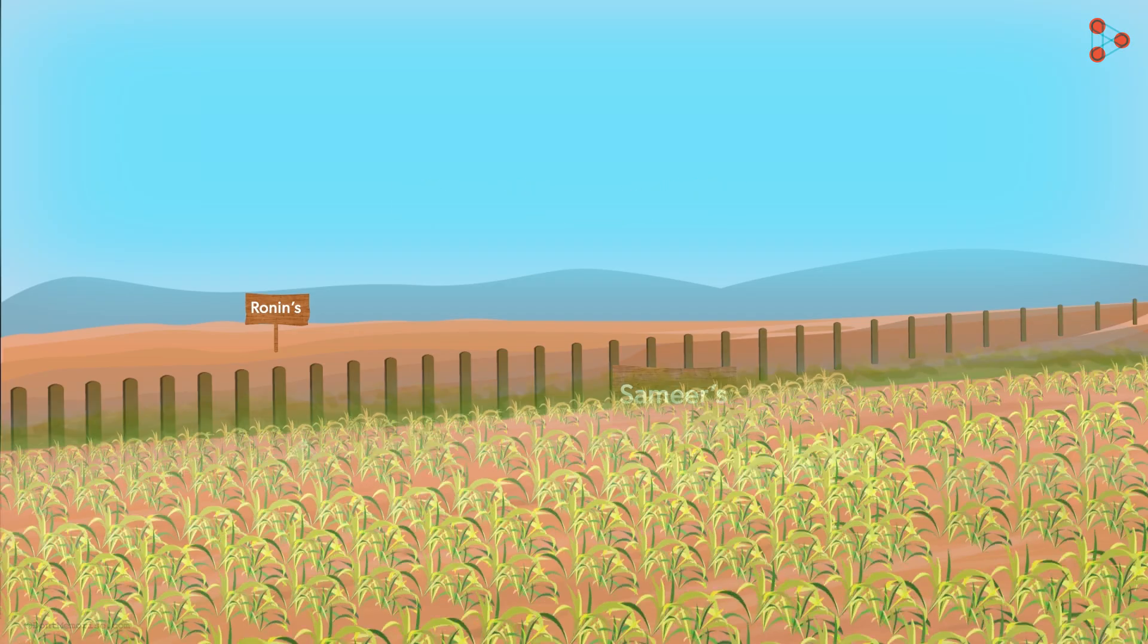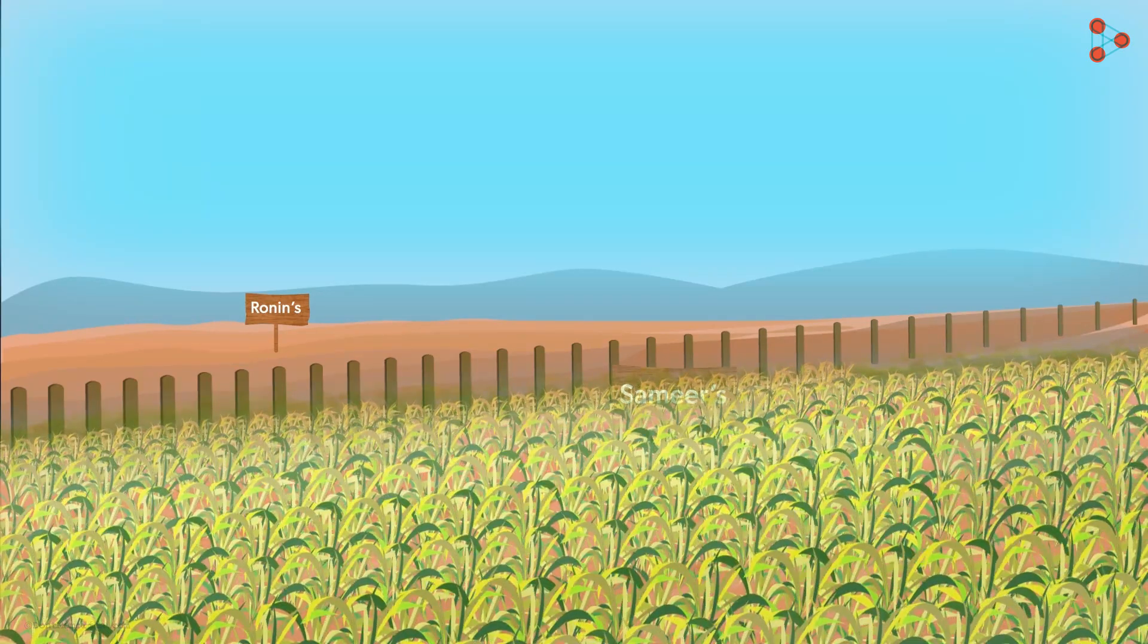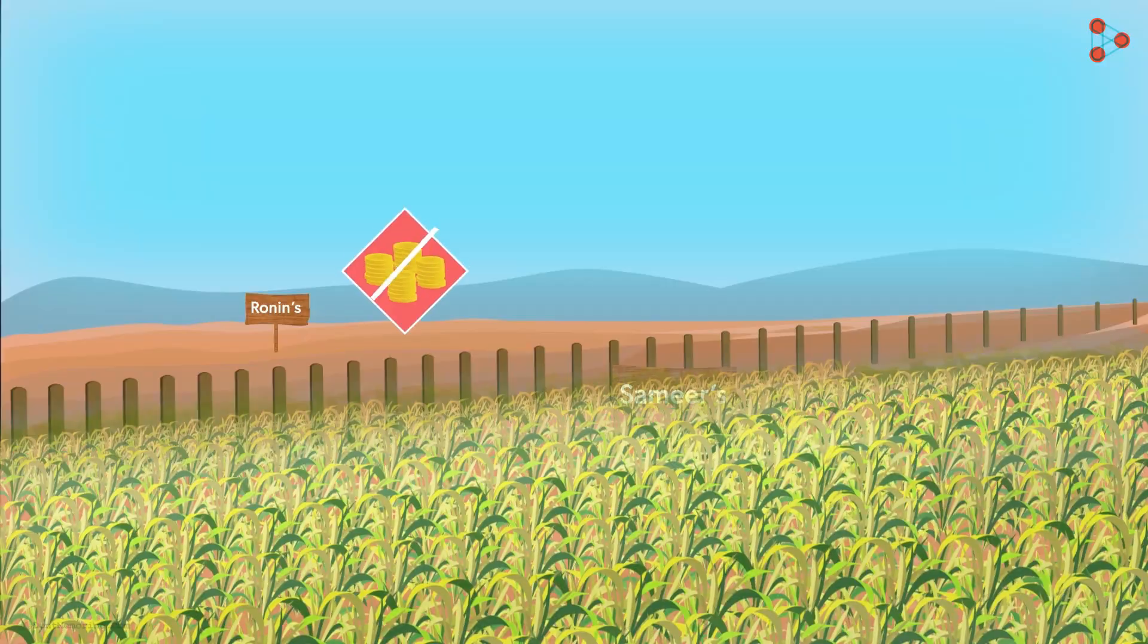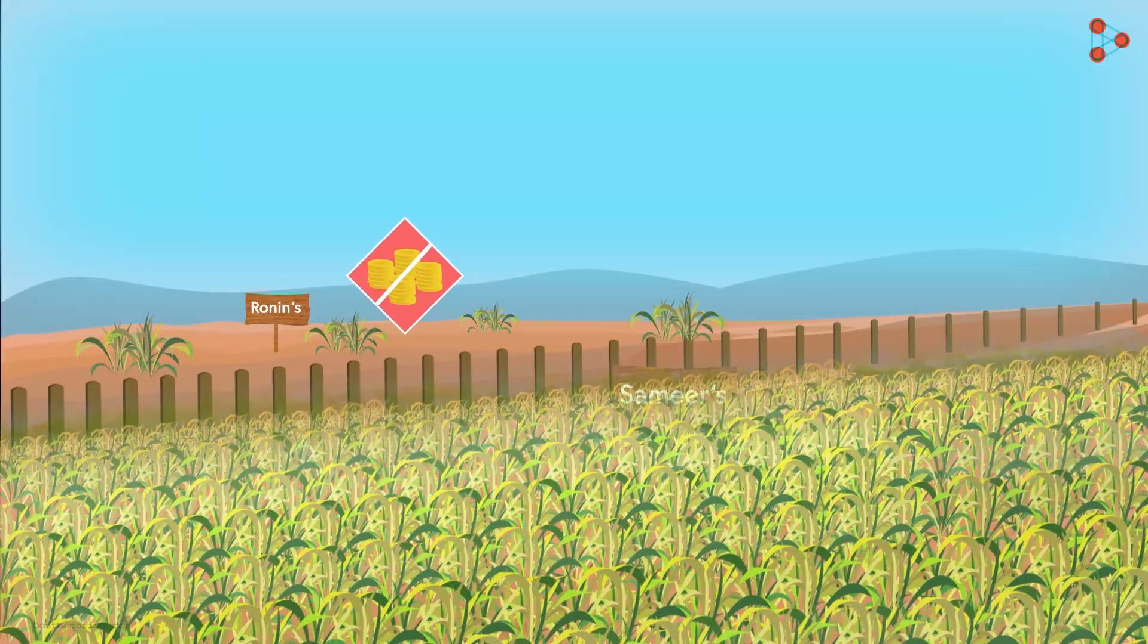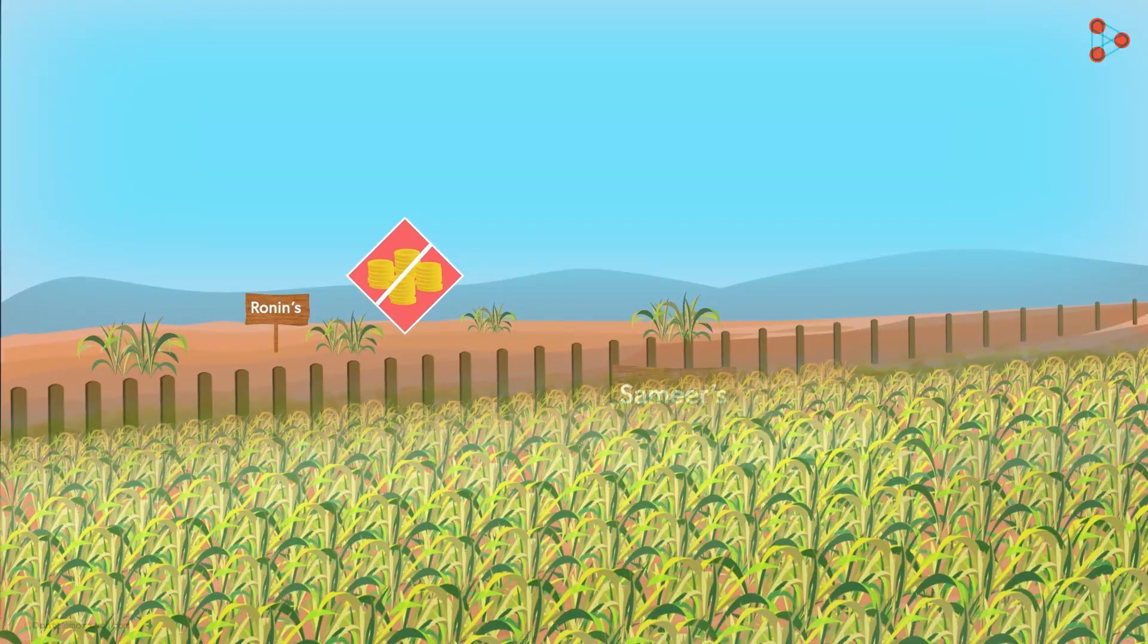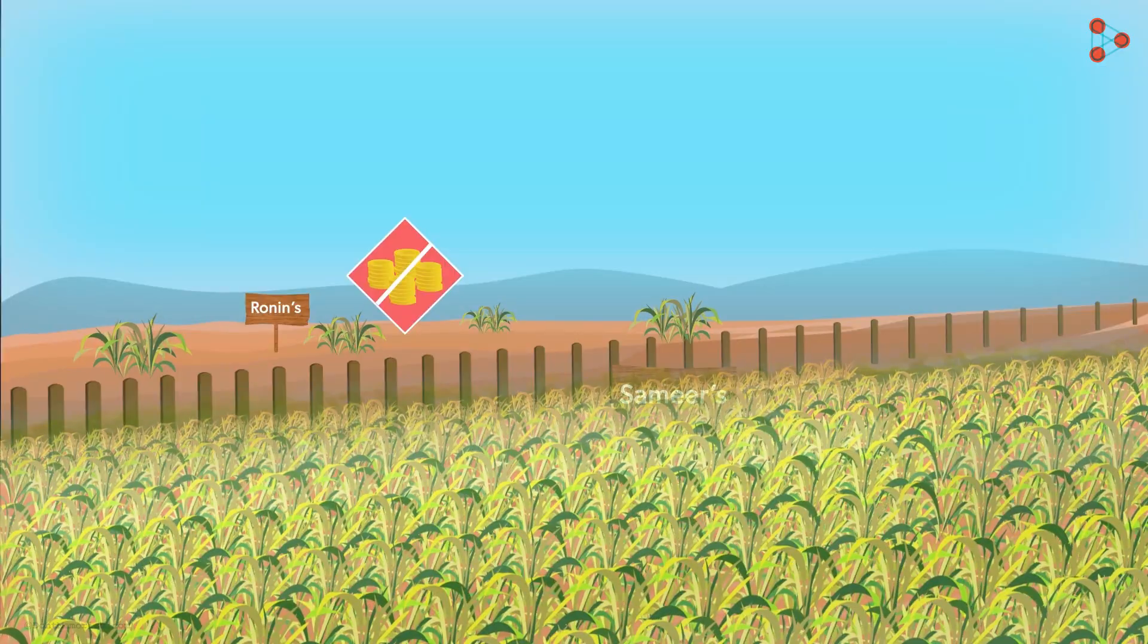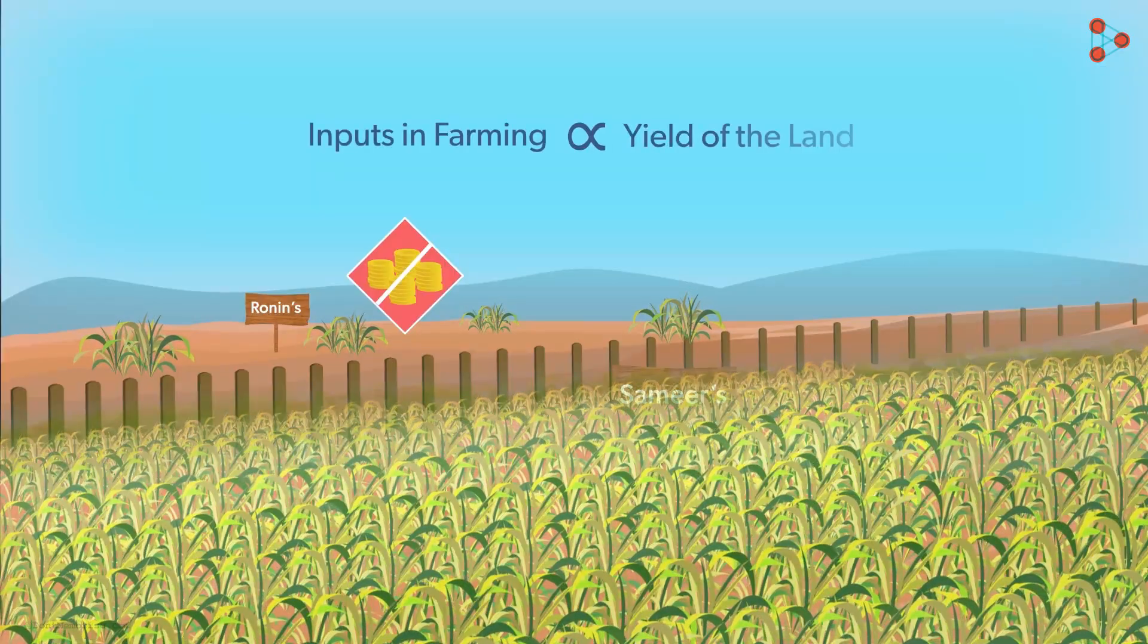Samir had a higher quantity of crop produced even in a small piece of land. Ronin did not have the finances to help him make a profitable harvest. This example tells us that the inputs in farming are directly related to the yield of the land.